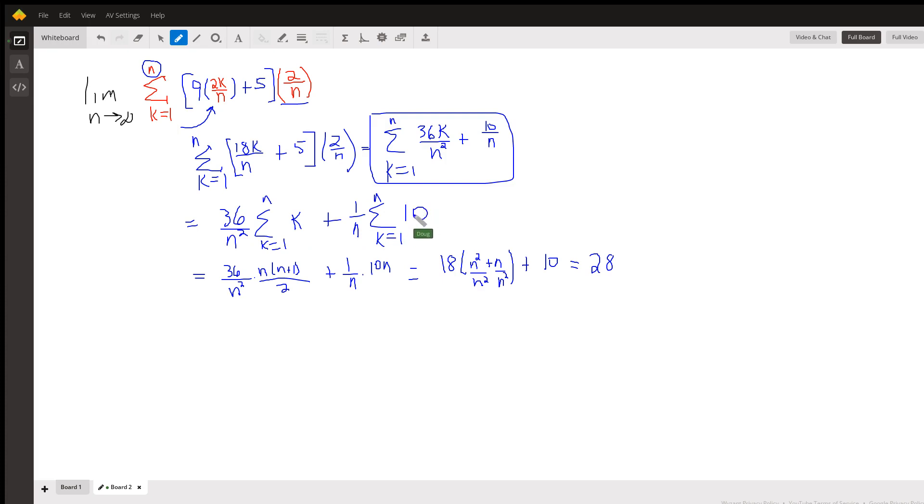And similarly for this term, 1 over n. Actually I could put a 10 out here if I wanted to and just have a 1 here. But the idea is that if we add 10 together n times, 10 plus 10 plus 10, that's 10n. So if we simplify this, I could distribute this n. Oh, where did this come from?